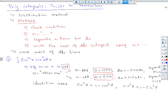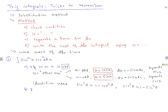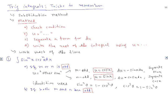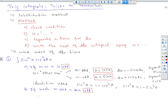For the second case, if both m and n are odd, we select u as the one with the largest power.